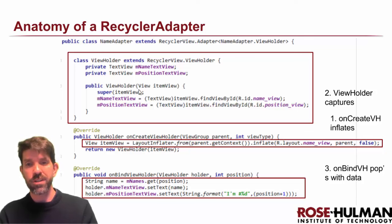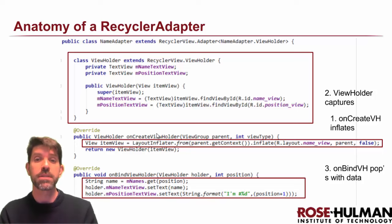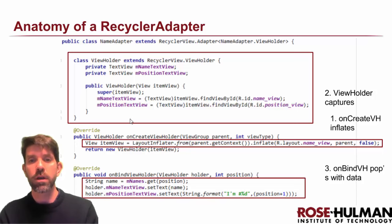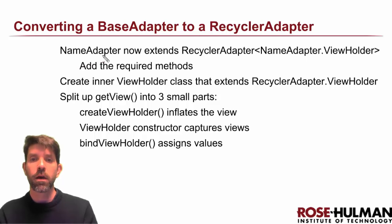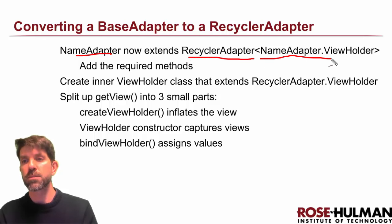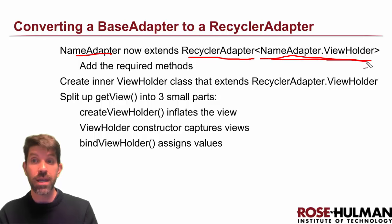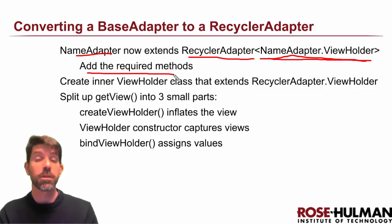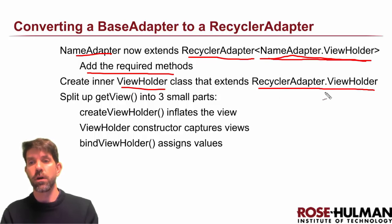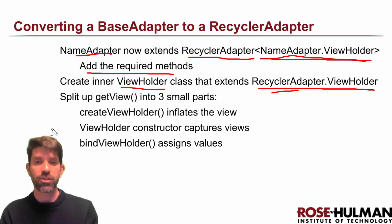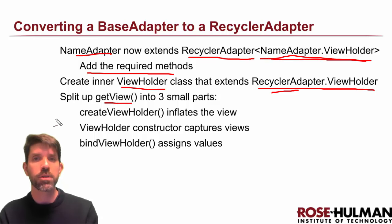We're cutting over from an existing base adapter, so let's mention the changes we need to make. We no longer extend BaseAdapter — we extend RecyclerView.Adapter, which is parameterized on the type of the ViewHolder. So we pass in our inner class, NameAdapter.ViewHolder. That will ask us to stub in the required methods. We'll also have to create the ViewHolder class, which extends an inner class from RecyclerView.Adapter, and then split up getView into the three parts.